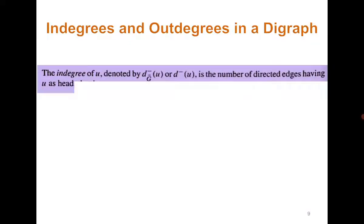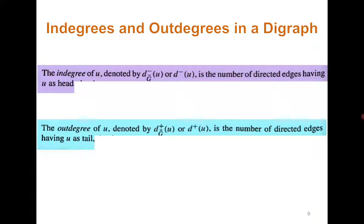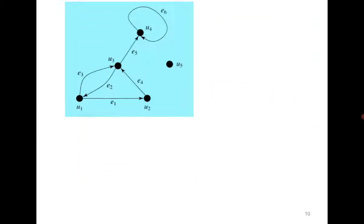In-degree is the number of edges coming into you, and out-degree is the number of edges going out of you. This will be clear from this example. You can see that in u1, there is only one edge which is coming into u1, so its in-degree is one, but its out-degree—there are two edges which are going out of it—so it's two.